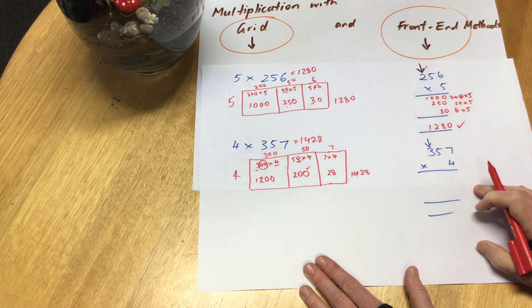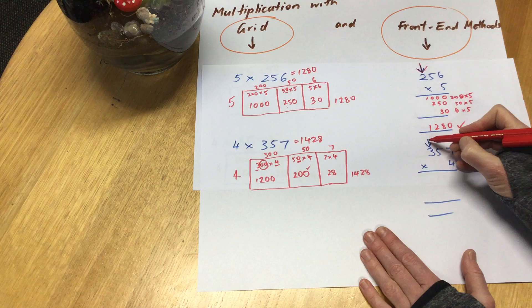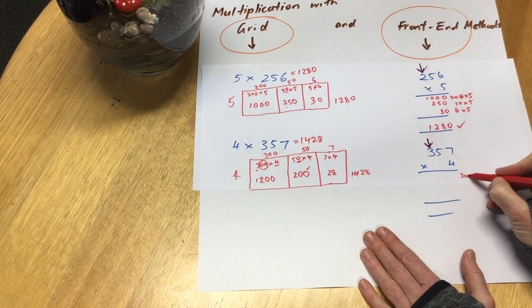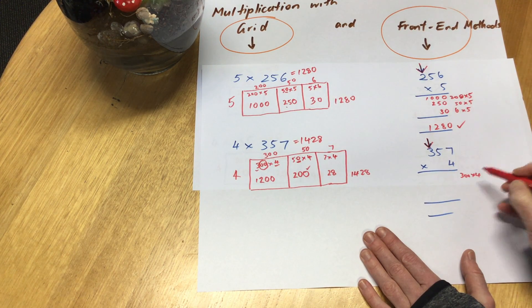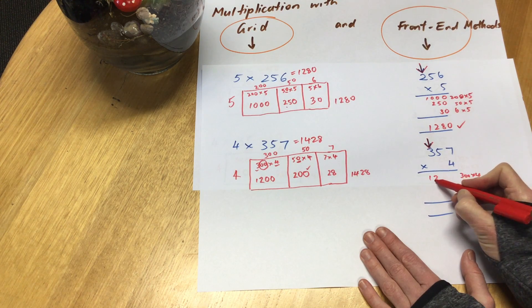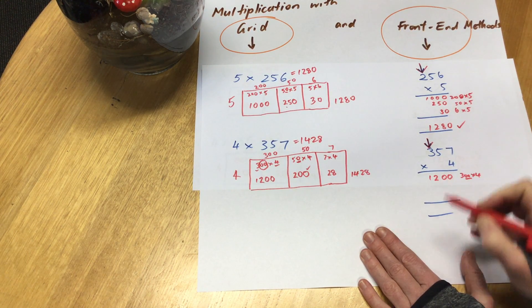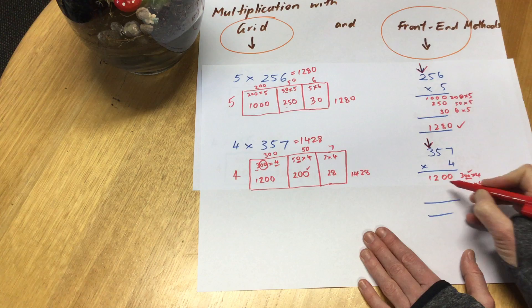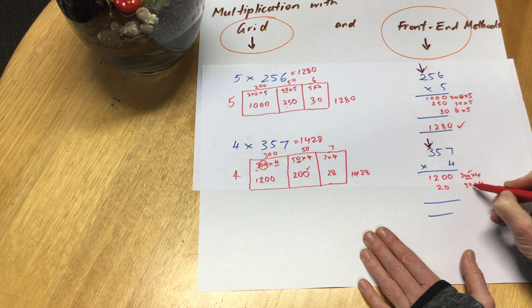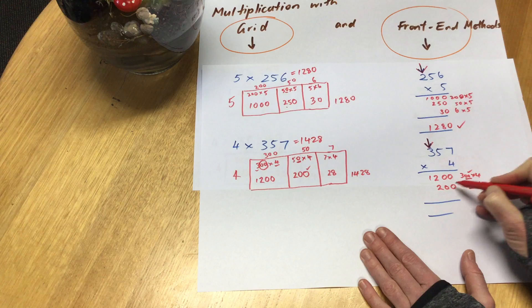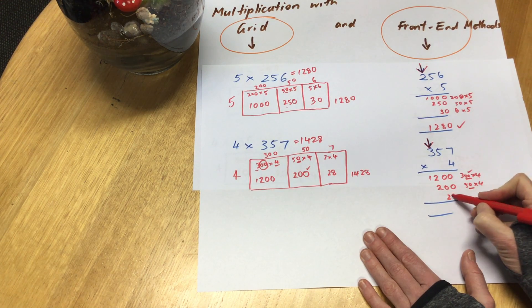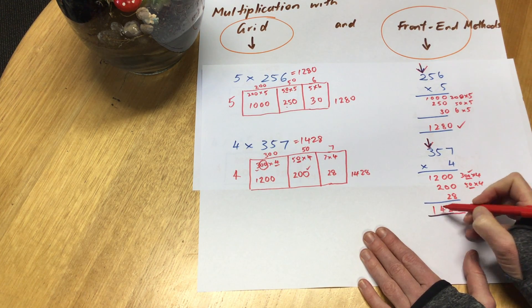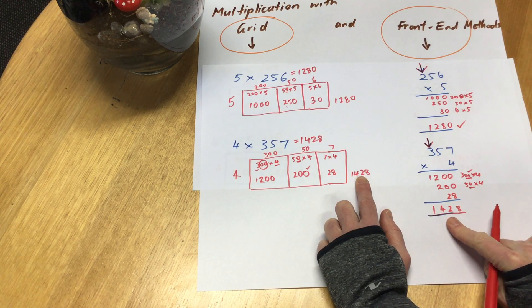Let's check it on the front-end method. Starting at the front end, 300 times 4. 3 fours are 12, and I can't forget it's hundreds I'm working with here, so that's 1200. Then I've got 50 times 4, so 5 fours are 20, but I've got to remember I'm working with tens, got to bring that in, so 200. And 7 fours are 28. Then I'm adding all of these up. 1428.